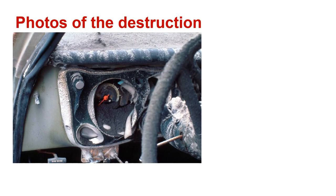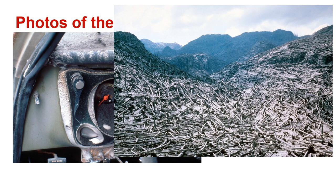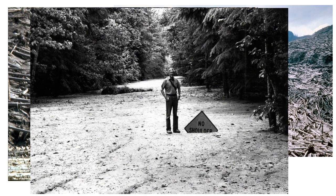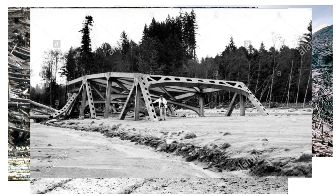Some photos of the destruction. Here's a car with the insides melted. Here's the hillside of trees that were felled — a lot of these trees were six feet in diameter. Here again is another picture of the trees, and if you take a look inside this green circle, you can see two men — you can compare the size of the trees and the damage with the size of the men. Here's a man standing on the mud after it hardened — you can see how deep it goes. There's the sign that's supposed to be at the road, and here is a man on top of the hardened mud near a bridge that was destroyed.